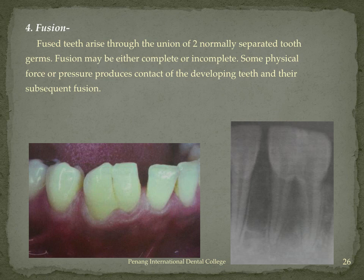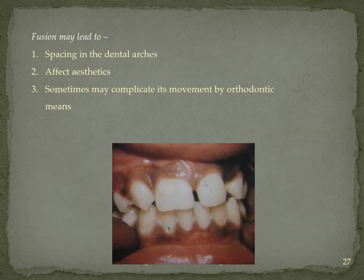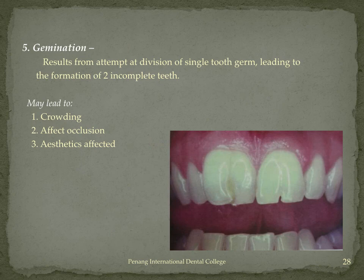Fourth common occurrence is fused teeth — a union of two normally separated tooth germs, which may be complete or incomplete due to physical force or pressure during development. This causes spacing, affects aesthetics, and complicates orthodontic treatment in terms of bracket placement and whether roots move individually or together. Next is gemination, where one tooth attempts to divide to form two incomplete teeth, which on the other hand leads to crowding and affects aesthetics and occlusion.